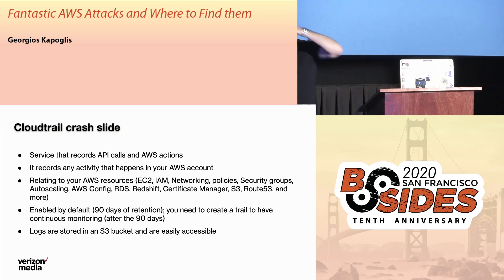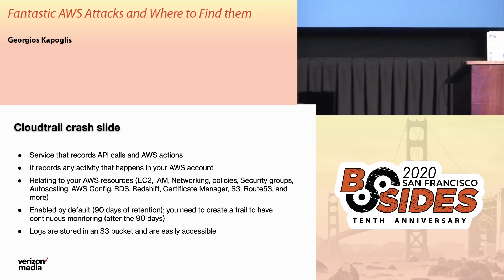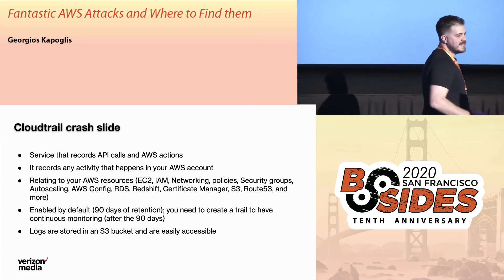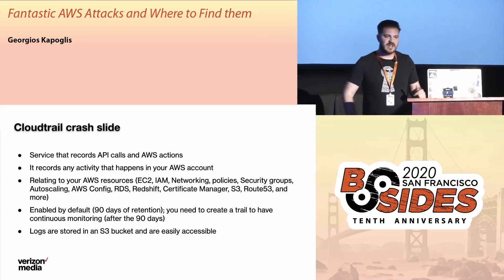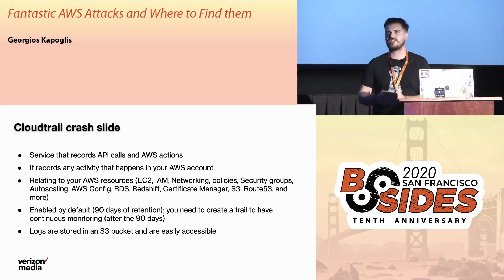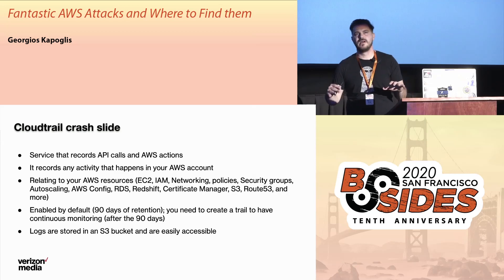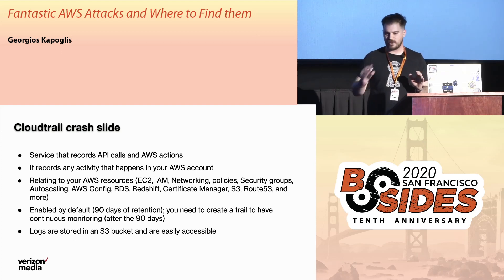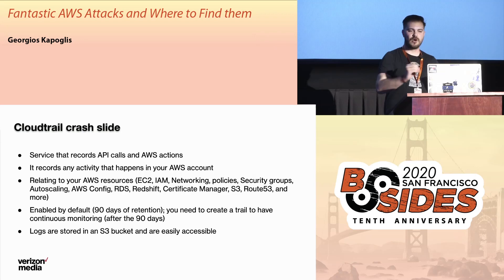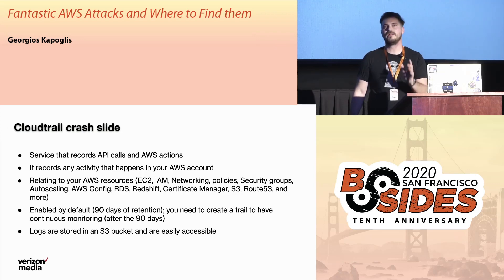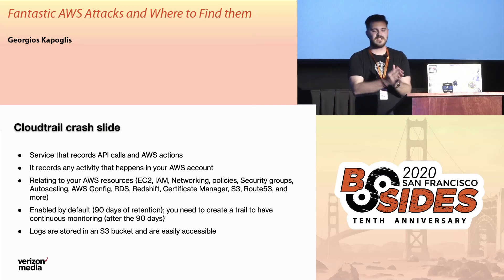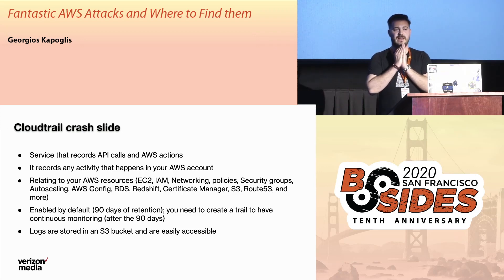So, CloudTrail — can you tell me if you're familiar with it? It's about three-fourths of the room. Essentially, CloudTrail is the service that records all API calls and AWS actions. It's going to record everything that happens on the API level — that's everything that happens in AWS. All the different services connect with each other through API calls, and all of that is logged in CloudTrail. It's our holy grail of artifacts, and it's really important for defenders to understand CloudTrail and its schema so we can build detections.